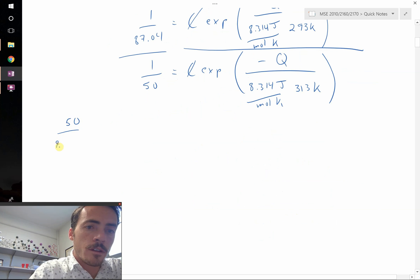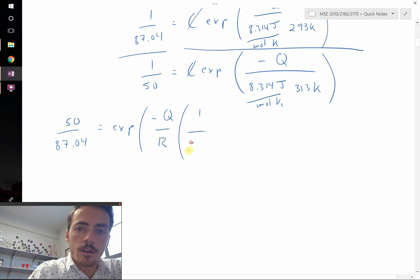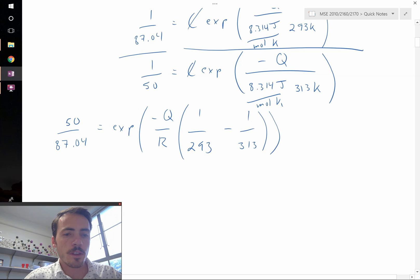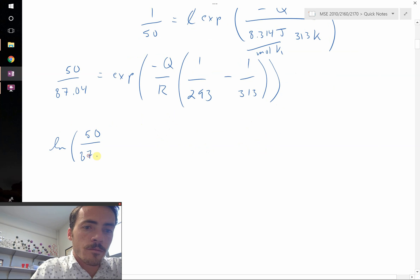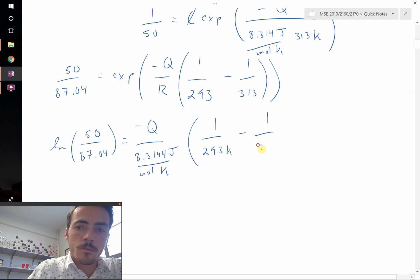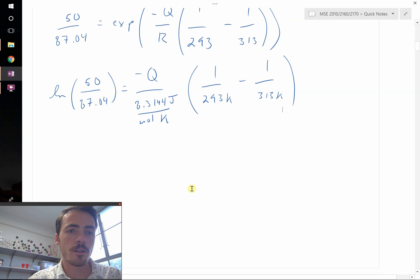So let's go ahead and rewrite this. 50 divided by 87.04 equals the exponential of negative Q over R times the quantity 1 over 293 minus 1 over 313. If we take the natural log of both sides, that allows us to get rid of the exponential.